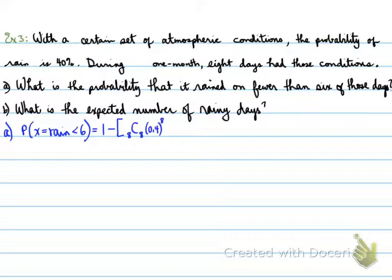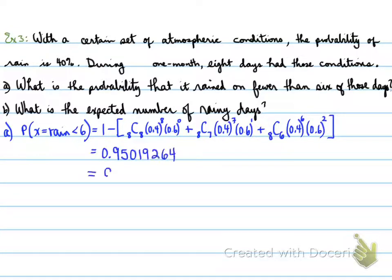So 1 minus [8 choose 8 times 0.4^8 and 0.6^0, that's the failure is 60%, plus 8 choose 7 times 0.4^7 times 0.6^1, plus 8 choose 6 times 0.4^6 times 0.6^2]. And that will give us our value.